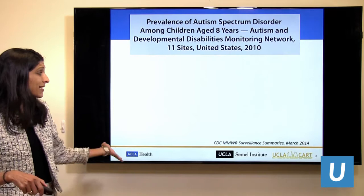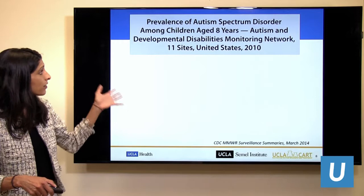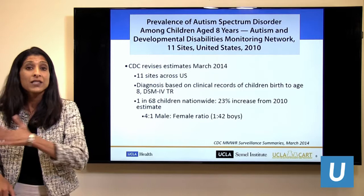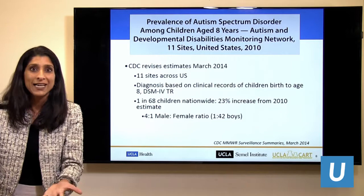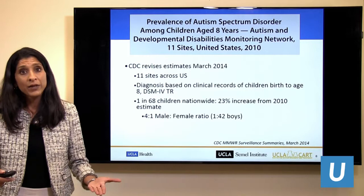Since 1980, as many of you know, prevalence has really increased with our increased awareness. Prevalence monitoring is done through the CDC, and the most recent summary published in 2014 estimated, based on querying 11 sites around the country, that 1 in 68 children nationwide met criteria for autism, with a 4-to-1 male-to-female ratio. It is more common in boys, like many neurodevelopmental disorders.